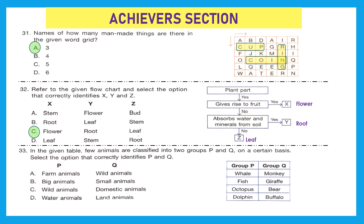Question 33: in the given table, animals are classified into two groups P and Q. Group P contains whale, fish, octopus, and dolphin — these look like water animals. Group Q contains monkey, giraffe, bear, and buffalo — these are land animals. So P is water animals and Q is land animals. The right option is option D, where P signifies water animals and Q signifies land animals.